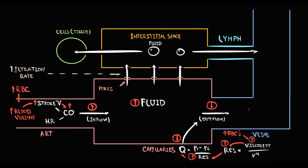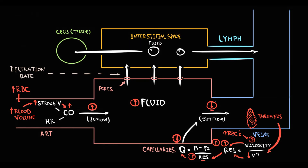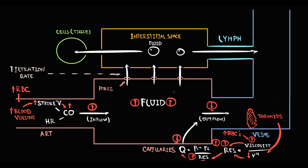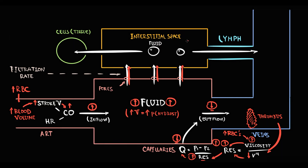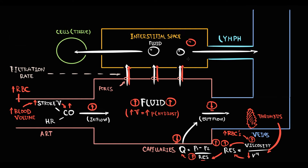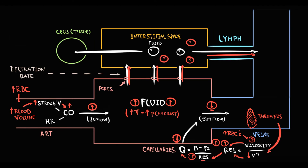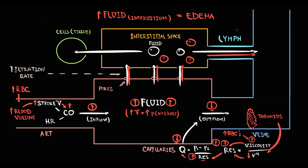Also in polycythemia there is a significant risk of deep venous thrombosis. If thrombosis occurs, the radius decreases, resistance increases, and blood outflow decreases further. The lower the outflow from capillaries, the higher the volume of blood inside them; the higher the volume, the higher the hydrostatic pressure, and the higher the filtration rate. Hydrostatic pressure pushes fluid from capillaries into the interstitial space. At some point, fluid accumulation in the interstitium prevails over lymphatic drainage, so fluid accumulates — causing tissue swelling, or edema.